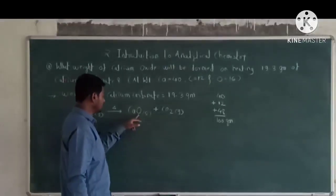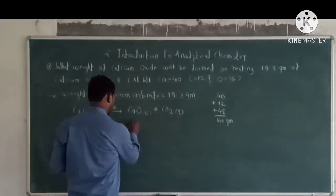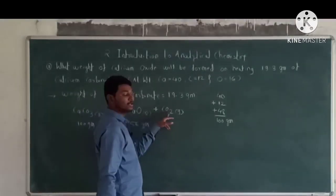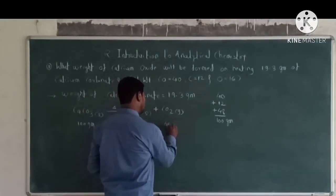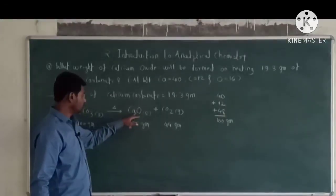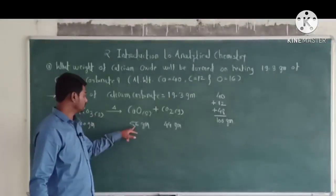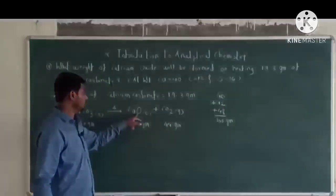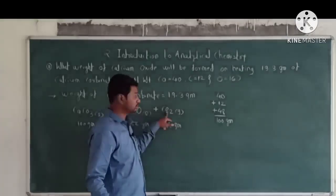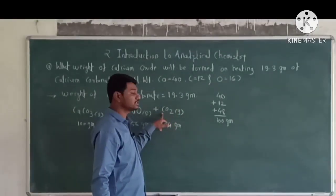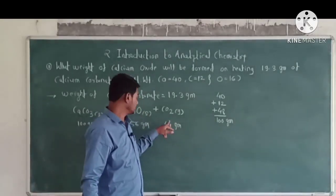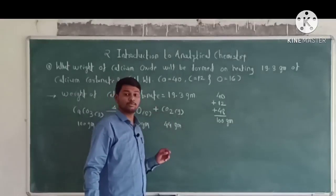The mass of calcium oxide is 56 grams (40 + 16 = 56) and the mass of carbon dioxide is 44 grams (12 + 16×2 = 12 + 32 = 44 grams).